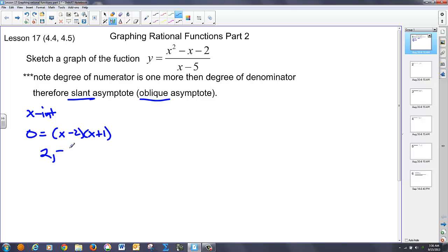Then a y intercept of two fifths, a vertical asymptote, set the denominator equal to zero. So x equals five.